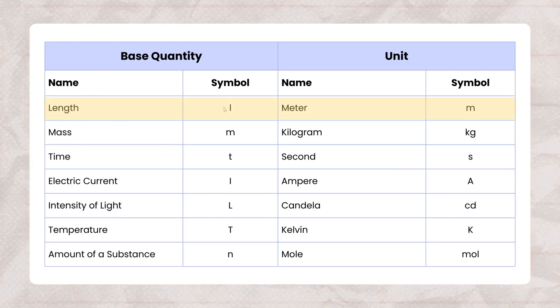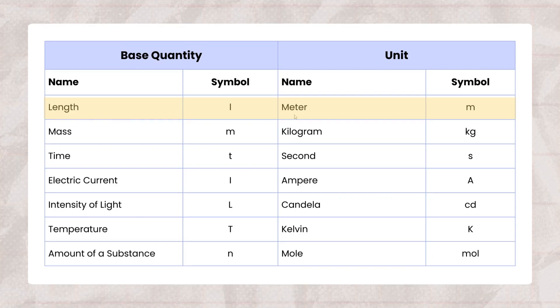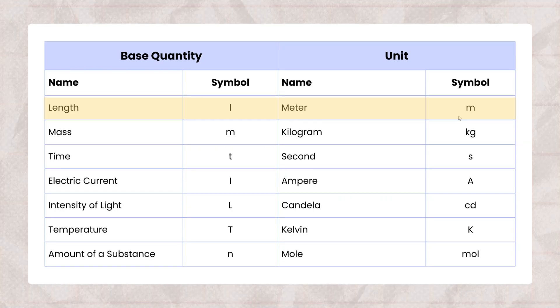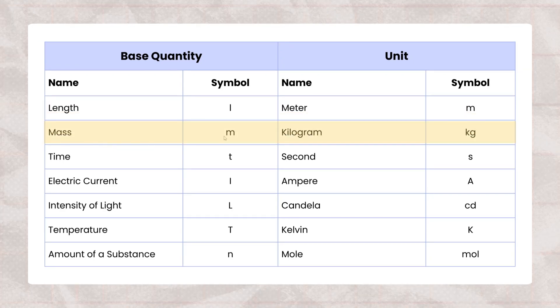Number 1 is length. The symbol of length is L. Unit of length is meter and symbol of meter is m. Second is mass, its symbol is m.